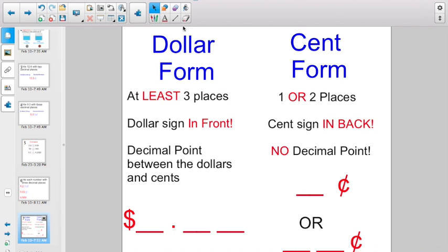So, changing it up also a little bit, they're throwing a little bit about dollar form and cent form to you. And there's a few rules you've got to realize to be able to distinguish the difference. If you're writing money in dollar form, you've got to use at least three places. You're always going to have something in the ones place, in the tenths place, and the hundredths place. The dollar sign is in the front, and you must have a decimal point between the dollars and the cents. In cent form, you can either use one or two places. The cent sign goes in the back, and there is no decimal point if you're writing your money in cent form.